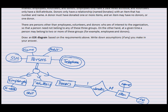There are persons other than employees, volunteers, and donors who are of interest to the organization, so a person does not need to belong to any of these three groups. So it won't be a double line. It will be a single line. On the other hand, at a given time, a person may belong to two or more of these groups. So the constraint is that it's overlapping, means a person could be an employee or a volunteer at the same time, or all three at the same time.